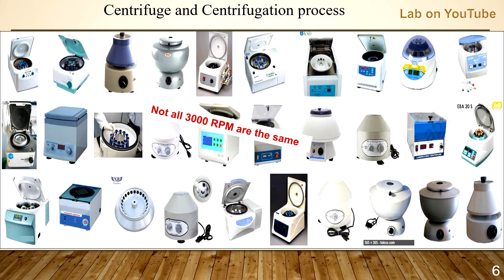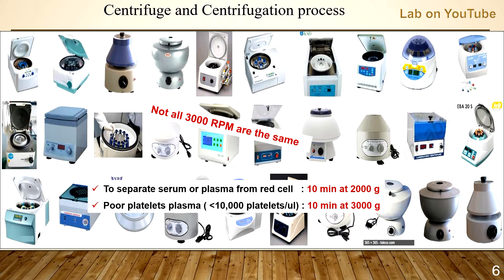That's why we don't depend on RPM in scientific language. To separate serum or plasma from red cells usually requires about 10 minutes at 2000 G. To obtain platelet-poor plasma — less than 10,000 platelets per microliter — it requires 10 minutes at 3000 G.